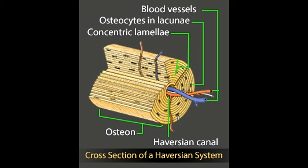Did you know? The Haversian system gets its name from an English physician named Clopton Havers (1657–1702), who is known for his seminal research in the analysis of the microscopic structure of bones and joints. He was the first person to describe Sharpey's fibers.